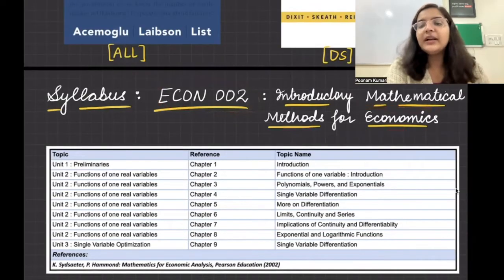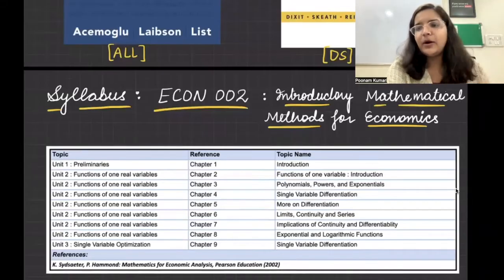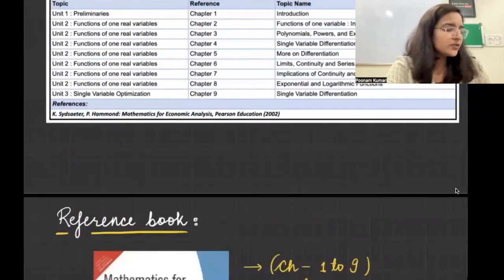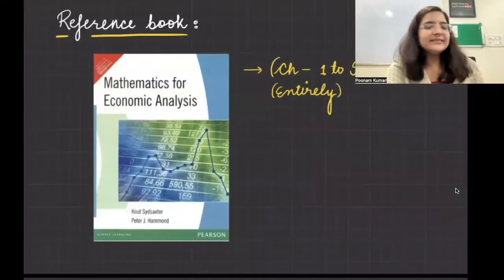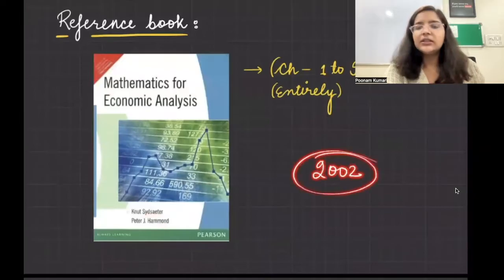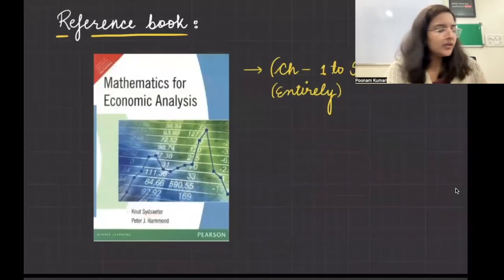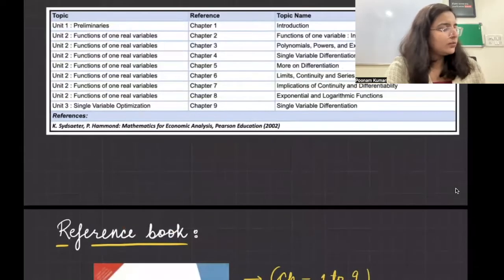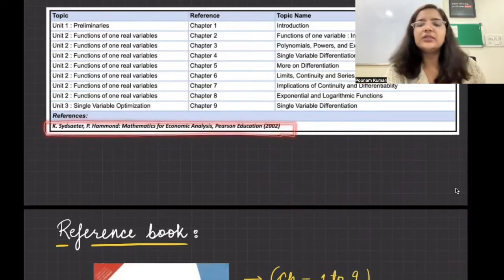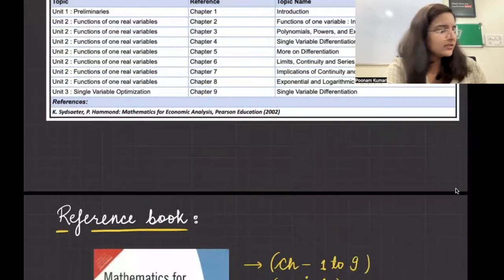So your course name is Econ002, Introductory Mathematical Methods for Economics. When you go to semester two, you will have intermediate mathematical methods for economics. So the level will keep on adding up. For this particular course, what is going to be your reference? This is going to be your reference book. The name of the book is Sydsaeter and Hammond 2002 edition. This is what you have to refer. So this is the exact name of the book: Mathematics for Economic Analysis Pearson 2002.